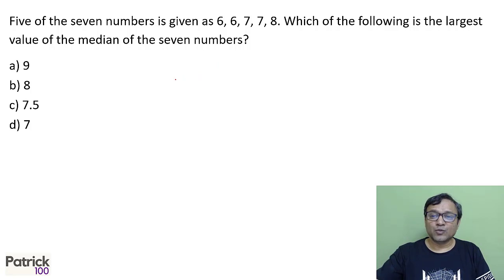5 of the 7 numbers are given. Which of the following will be the largest value of median? The largest value of median, let's take the two numbers very large. Let's say 9 and 10 or much larger, that doesn't matter. So median is a middle value. Here if you look at the middle value is 7. So median is 7.